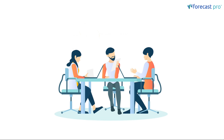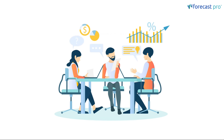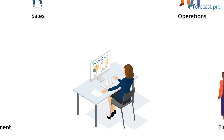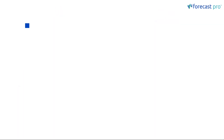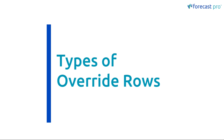Everyone's situation is different. For example, you might work in a team where multiple people work directly within Forecast Pro and make overrides and adjustments together as a team. In another scenario, you might be in charge of Forecast Pro and receive feedback from multiple sources — whether that be management, sales, operations, or finance — and it's your job to consolidate all of this information into Forecast Pro and come up with a final consensus forecast. Whatever your setup, you will be using the override grid to accomplish this.